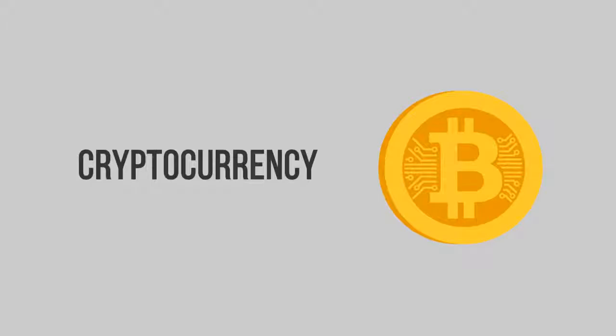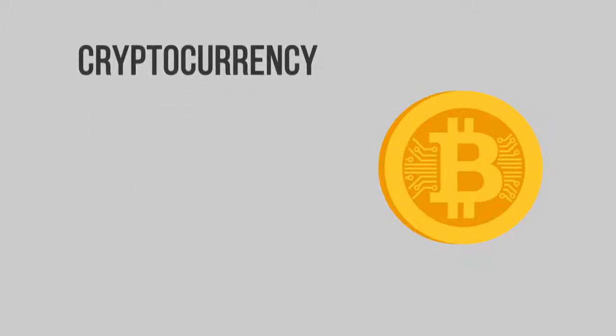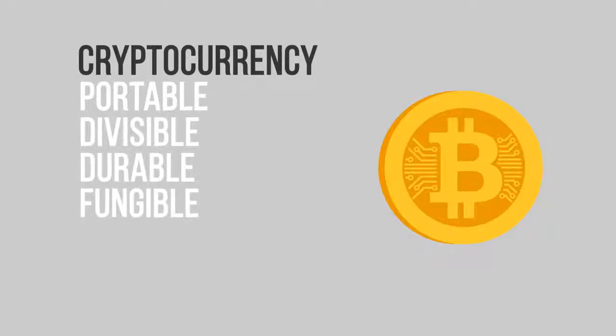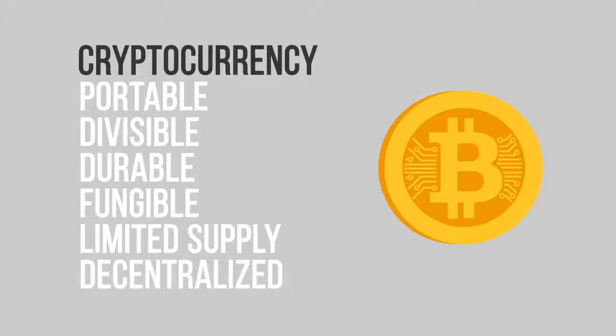Bitcoin is called a cryptocurrency and that is very different from fiat currency. It has everything a currency has: portable, divisible, durable and fungible. On top of that, it has a limited number of supply, just like gold, and it is decentralized. No one controls it.